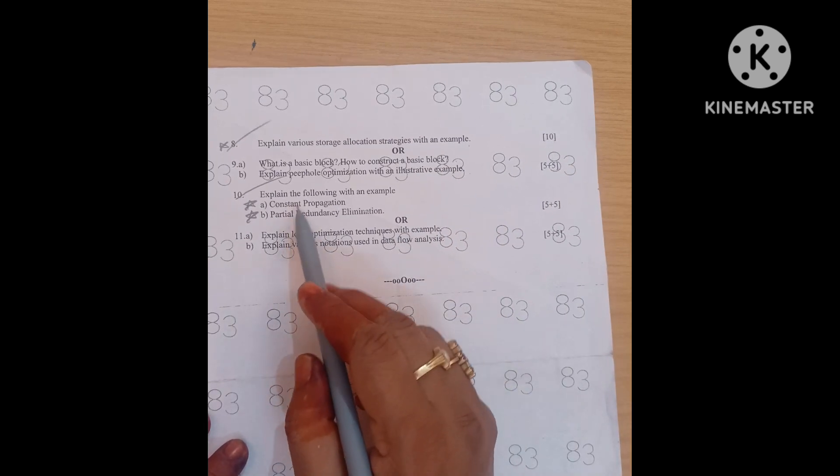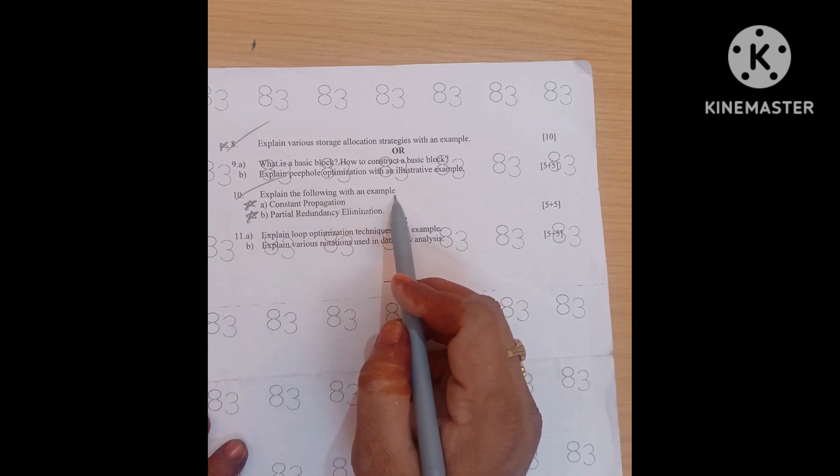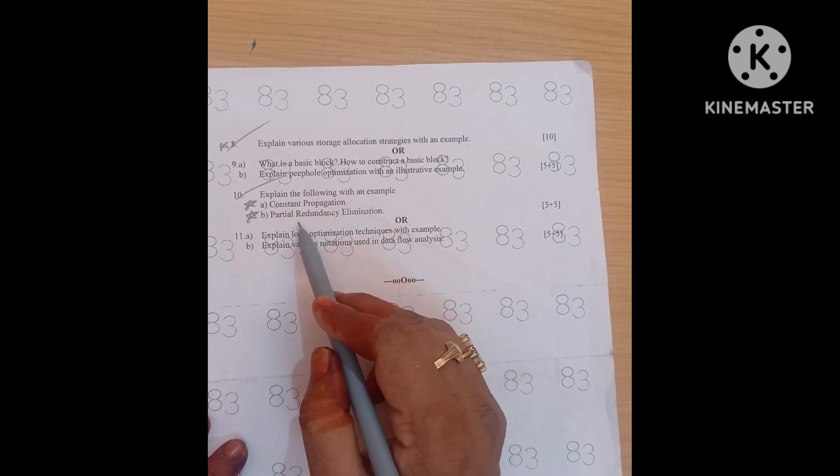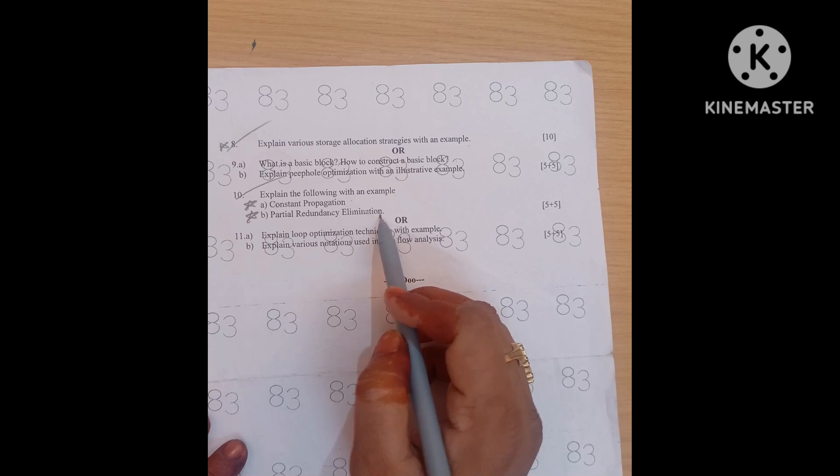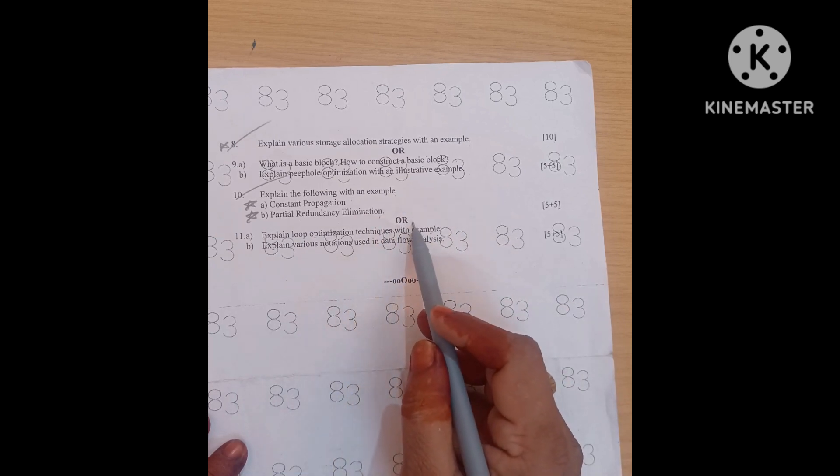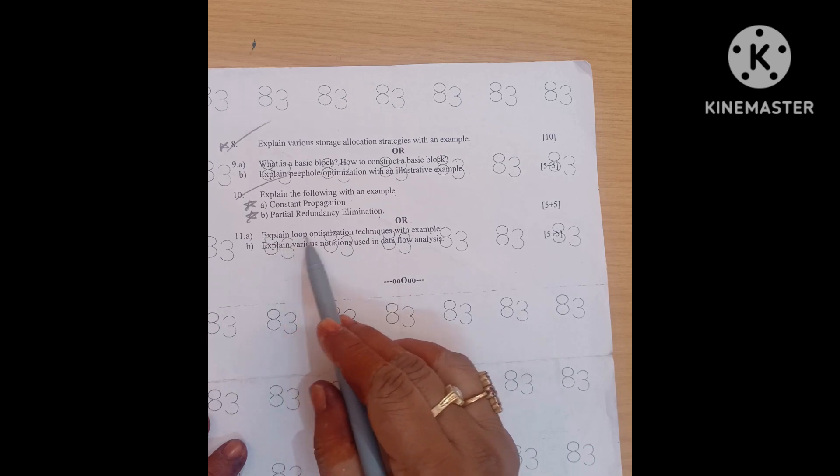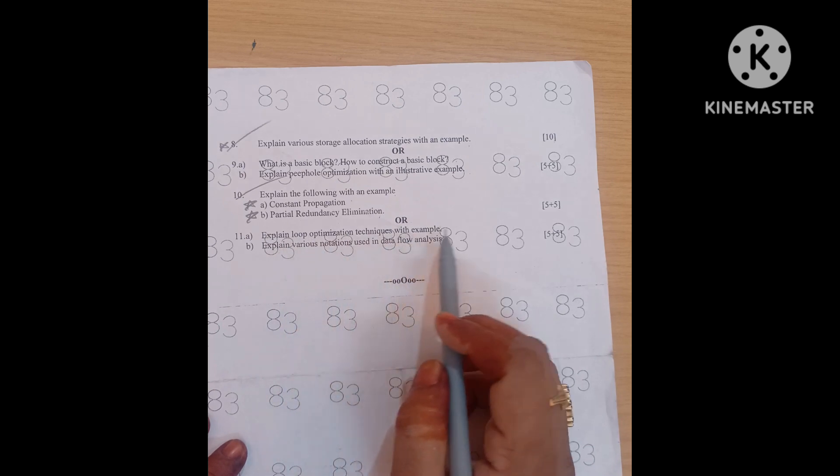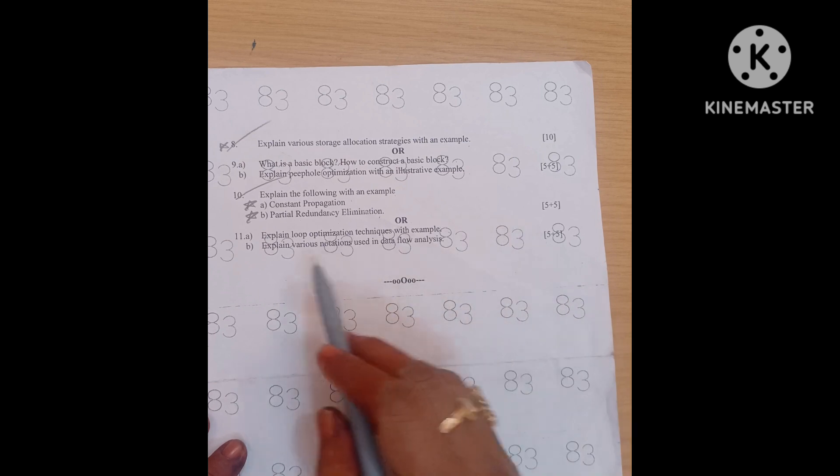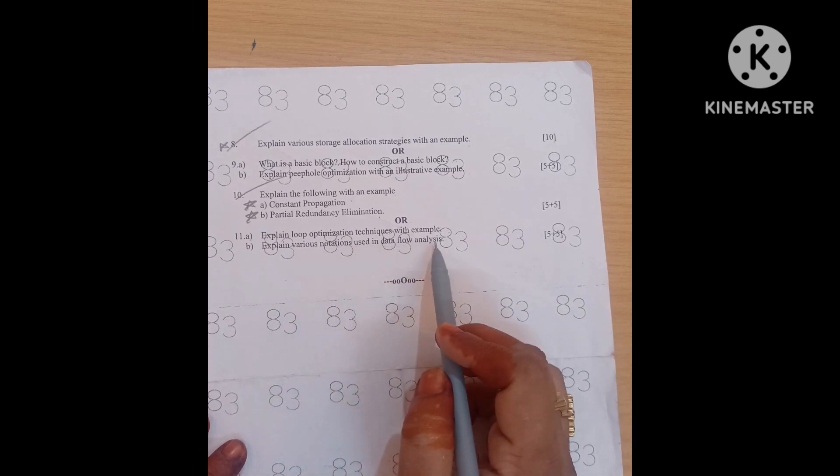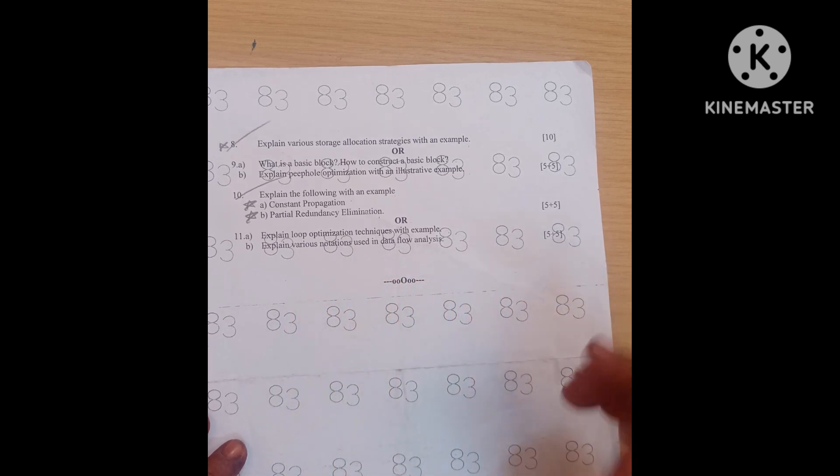And last unit is explain the following with an example: constant propagation, partial redundancy elimination, 5 plus 5, 10 marks question. Or last unit 5th unit last question is explain loop optimization techniques with example, 5 marks question. Explain various notations used in data flow analysis, 5 marks question.